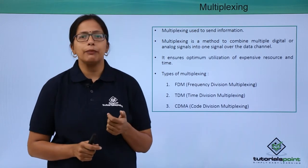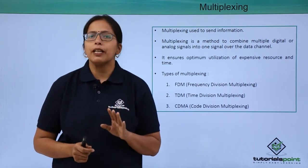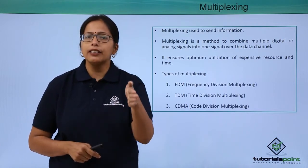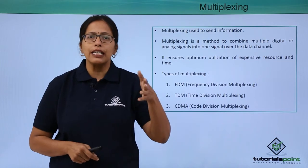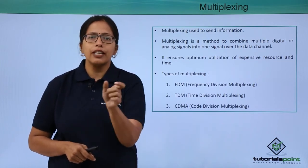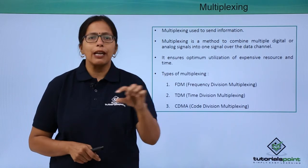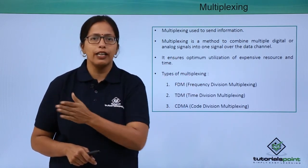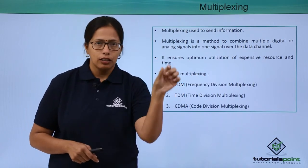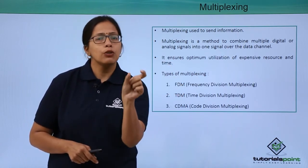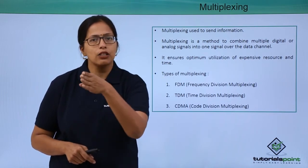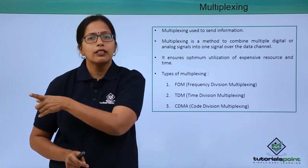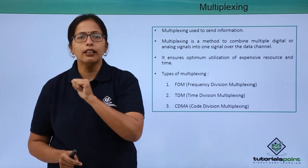Next, let's come to Time Division Multiplexing. In TDM, only one frequency is used. A single frequency is divided into time slots and each user is given a different time slot. At a time, eight users can be supported. User one through user eight each get one slot — for one microsecond, user one will be using that frequency, then user two will use the next slot, and so on. After the eighth slot is over, user one will again come and use that frequency to start transmitting data.